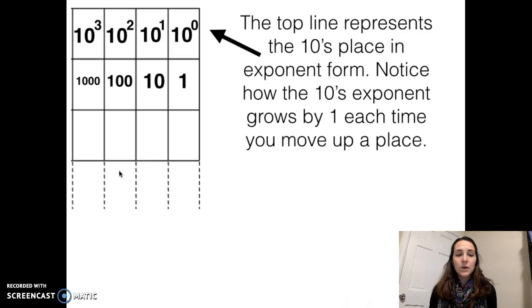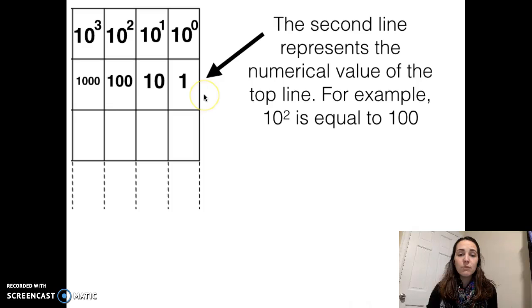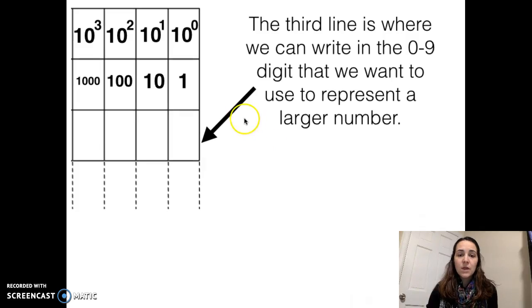We can break down a larger number using a chart that looks like this. You'll notice that the top line represents the 10's, and particularly it's representing the 10's with a particular exponent. Notice how the exponents grow each time we move over a column. The second row represents the numerical value of the top line. For example, 10 squared equals 100, and 10 to the third equals 1,000. The third line is where we're going to write in our digits.